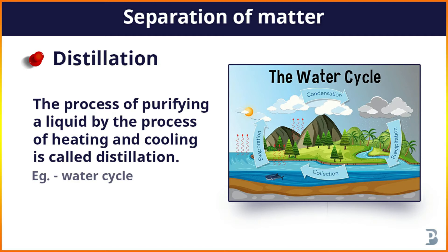In the water cycle, some quantity of water from rivers, ponds, seas, lakes, etc. converts into vapor. Because of their light weight, the vapors go upward, and there, because of the lower temperature, they again convert into clouds and small droplets of water.